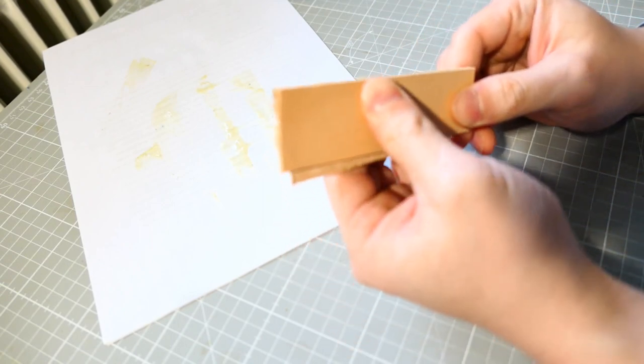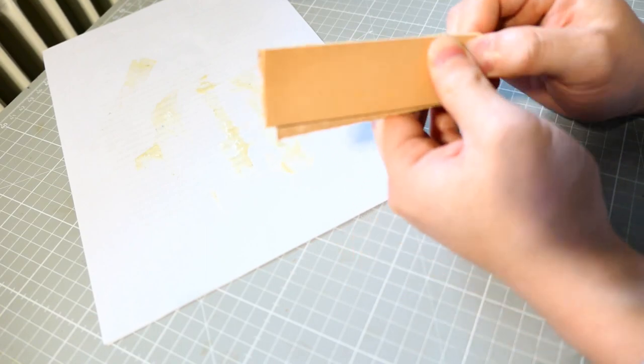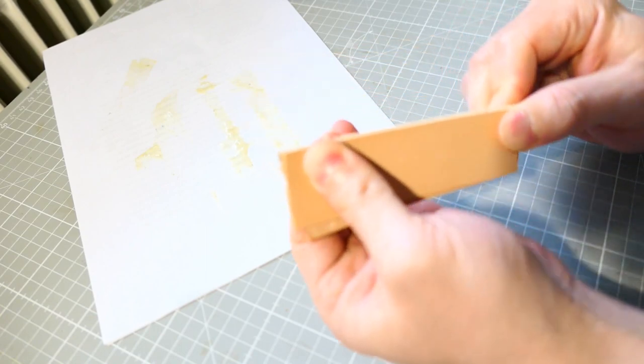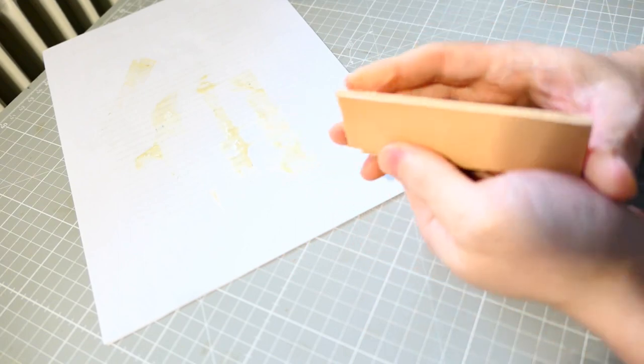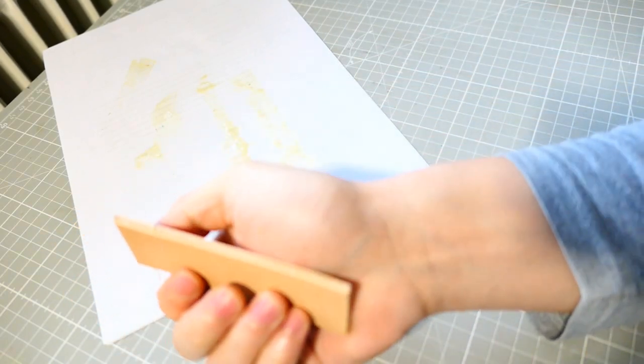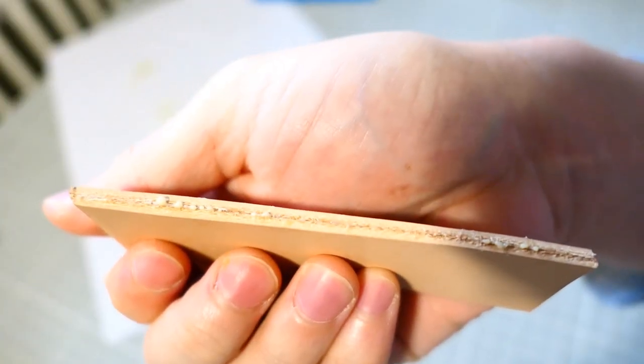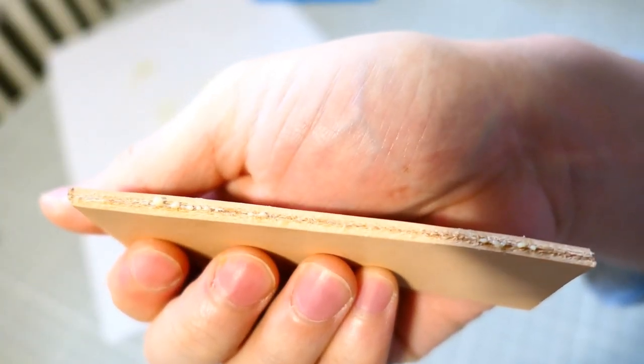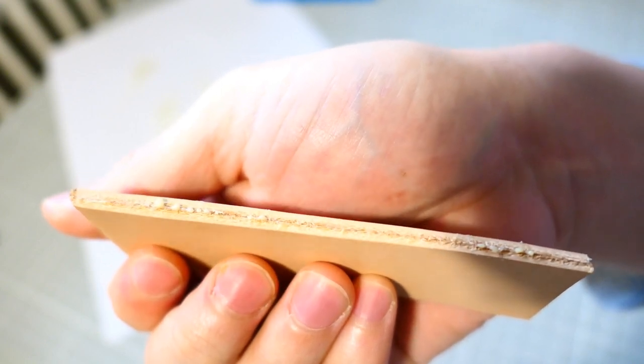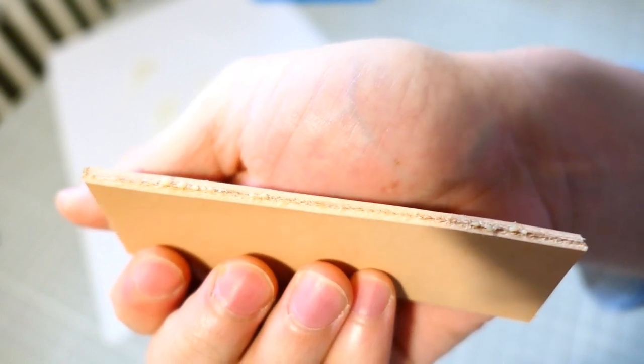So what happens after you really glue two pieces of leather together? You will end up with the glue squeezed out like this. It's just the excess glue has been squeezed out from your leather.